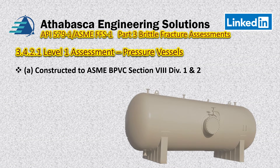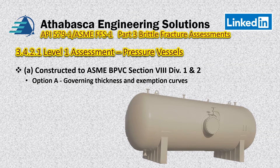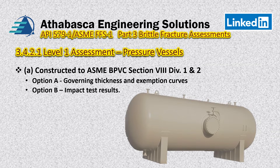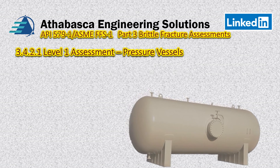In Part A of section 3.4.2.1, it simply states that to do a Level 1 assessment, the vessel has to be designed to ASME Boiler and Pressure Vessel Code Section 8 Division 1 or 2. Secondly, you have an option: you can use the governing thickness and exemption curves found in Section 8 Division 1 and 2. Part B allows use of impact test results to determine brittle fracture issues.